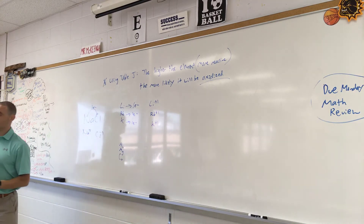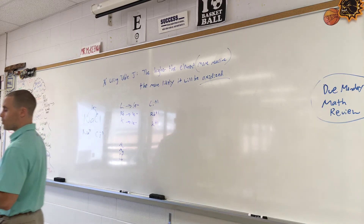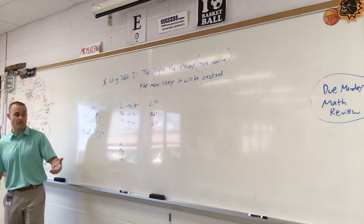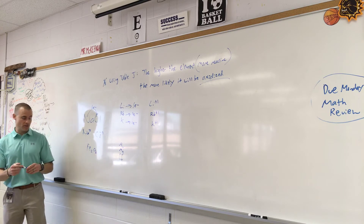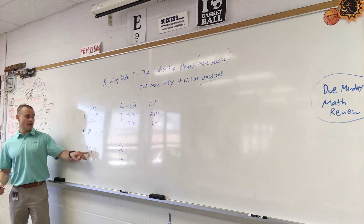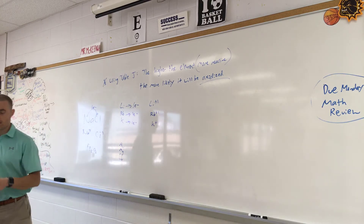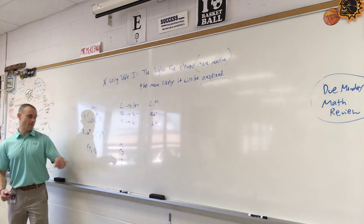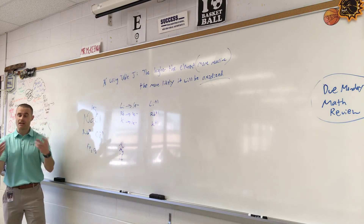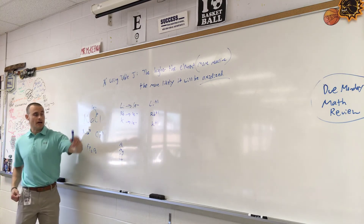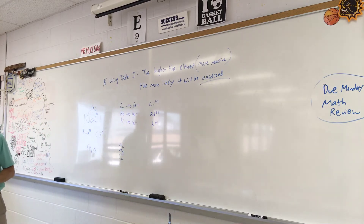The reason iron rusts is because it oxidizes. When iron rusts, it becomes more stable than just iron — it's Fe²⁺. When rust forms as Fe₂O₃ or FeO, that's Fe³⁺. That's actually good for iron, it's a good thing. We don't like rust because it looks bad and deteriorates the metal, but the reason it happens is because iron is being oxidized — losing electrons — and the oxygen is being reduced.